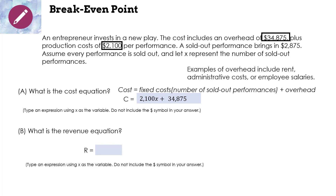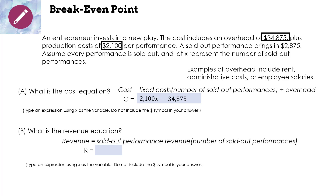What is the revenue equation? How much money are we going to make? Revenue equals sold-out performance revenue times the number of sold-out performances. When we look at the problem, they tell us that a sold-out performance gains us $2,875. So our revenue is going to be R = 2875x.